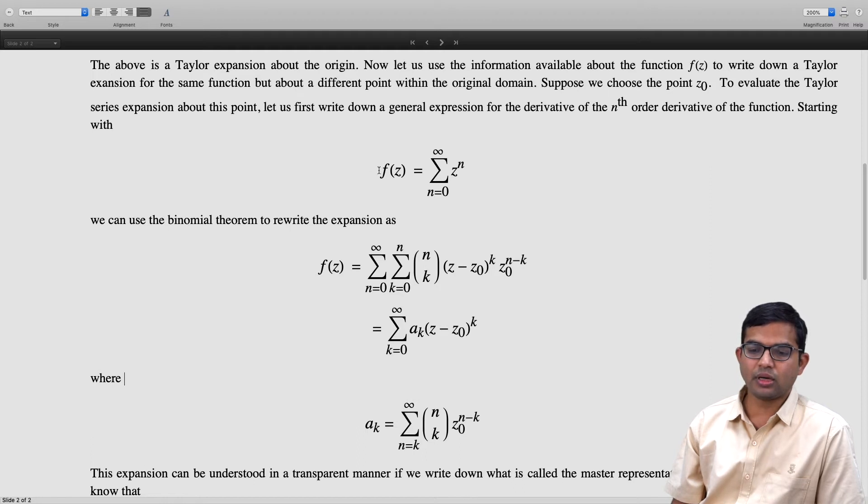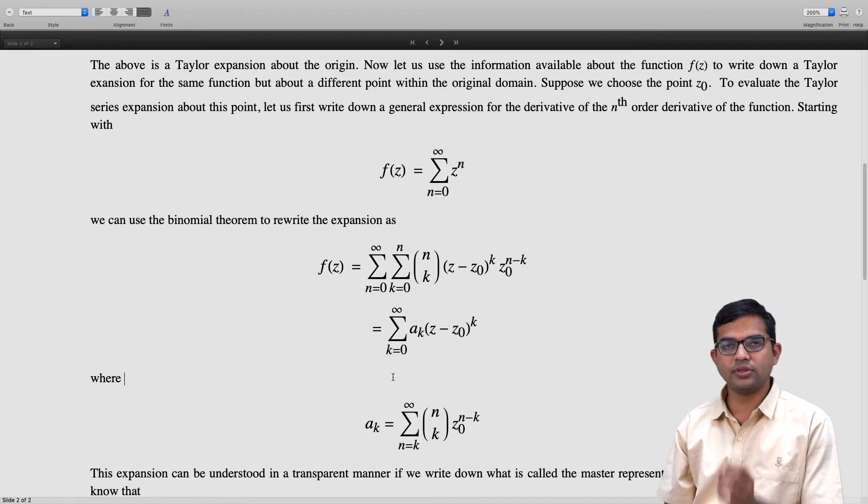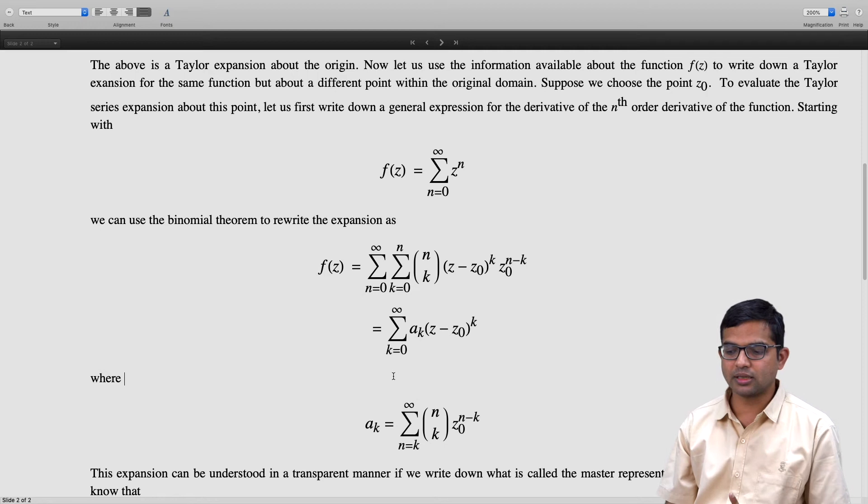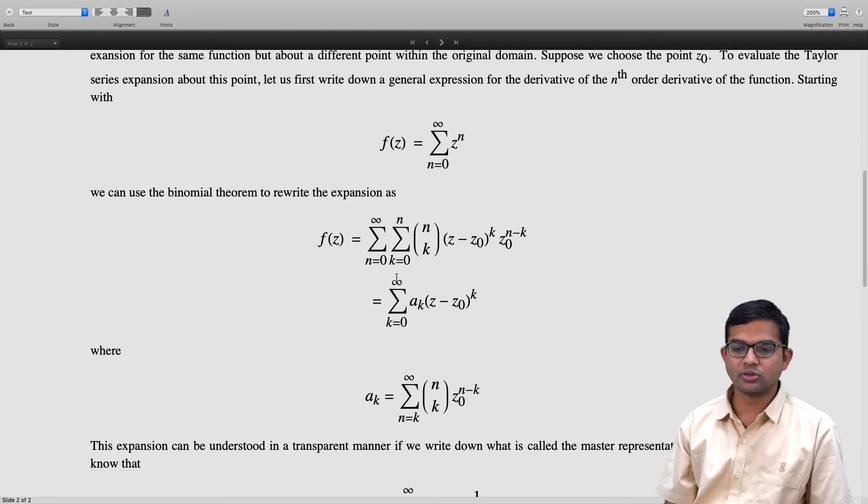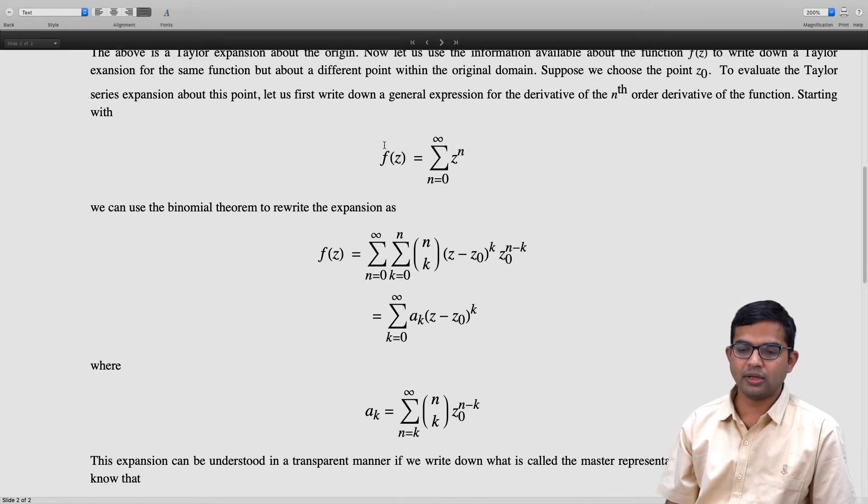This whole thing can be understood in a transparent way if we just use what is called a master representation of the original function. Although we started with this Taylor expansion, we also know that in fact this sums to 1/(1-z).